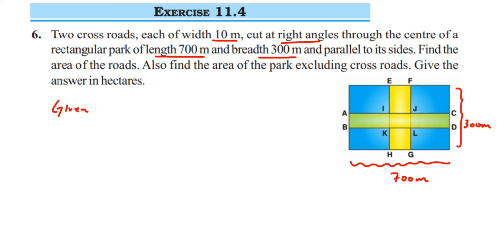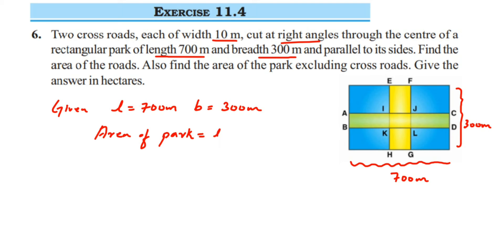Given: length = 700 meter and breadth = 300 meter. Area of park = length × breadth = 700 × 300 = 210,000 meter square.